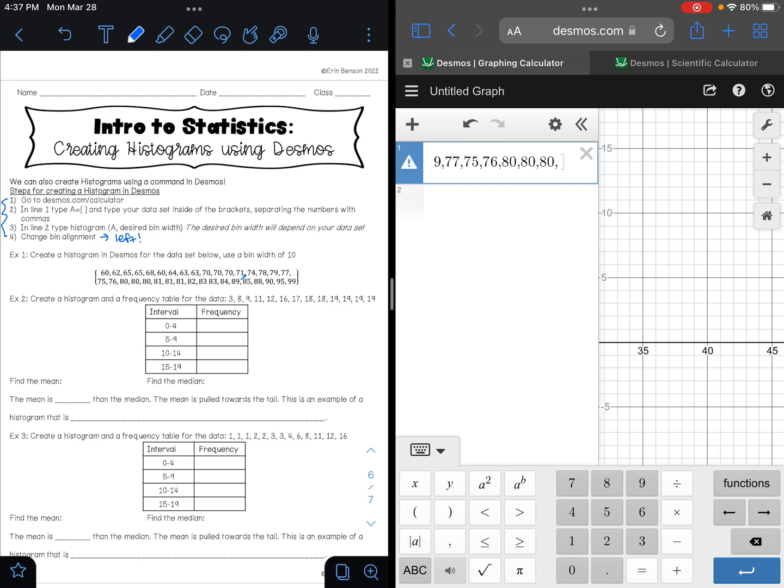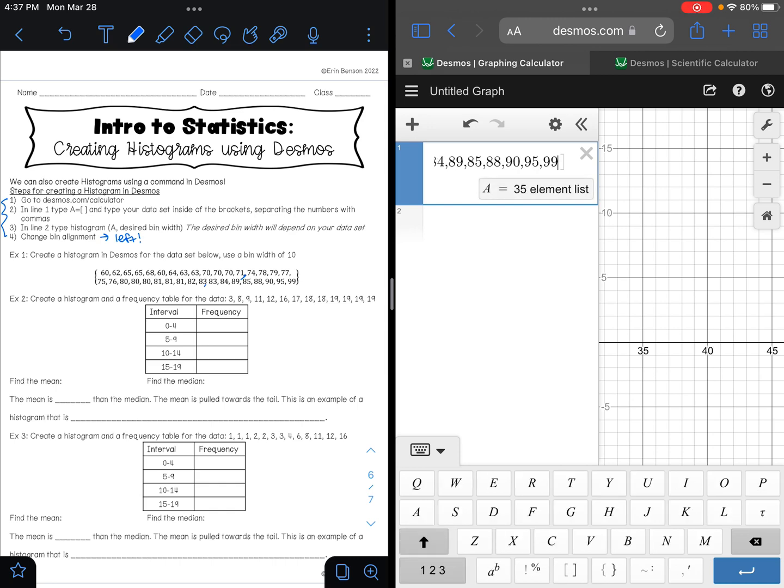This should be a comma here. 71, 71, 74, 78, 79, 77, 75, 76, 76. Three 80s, 82, two 83's, 84, 89, 85, 88, 90, 95, and 99. So here is my list.